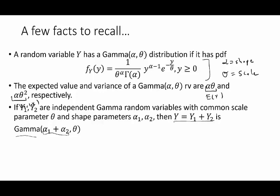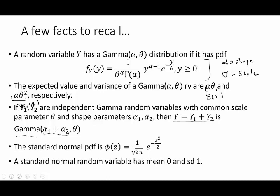Finally, just a couple of facts about the standard normal. We usually use the Greek letter phi — written in two common ways — to denote the PDF for the standard normal distribution, and recall that the standard normal has mean 0 and standard deviation 1.